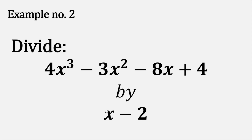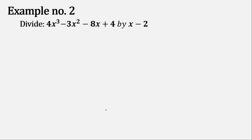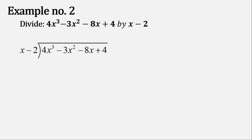Now let's go to example number 2. We divide 4x cubed minus 3x squared minus 8x plus 4 by 2x minus 2. Again, let's arrange the dividend into standard form and fill out any missing terms. We have degrees 3, 2, 1, and 0 — so we are good in standard form.